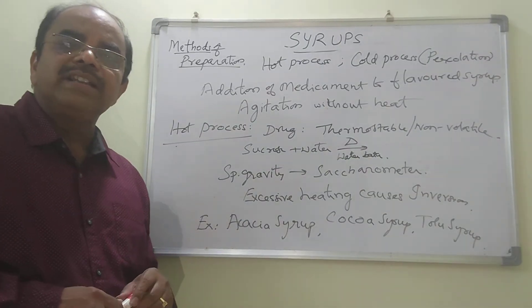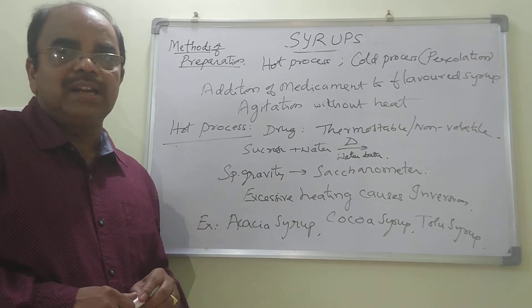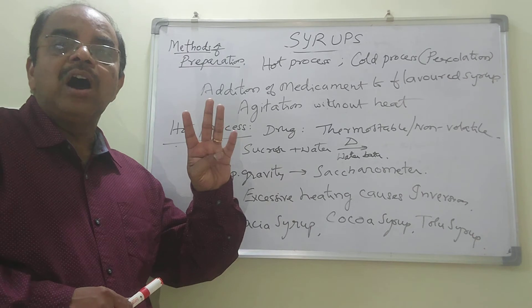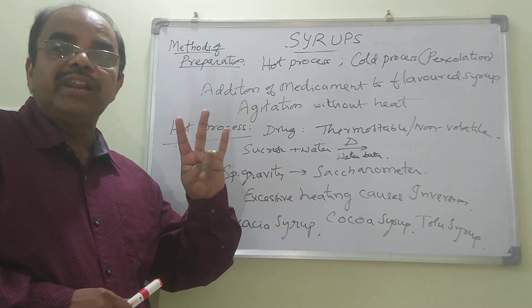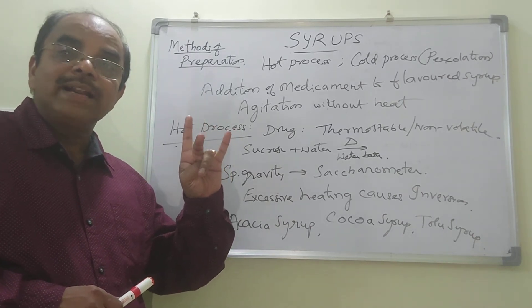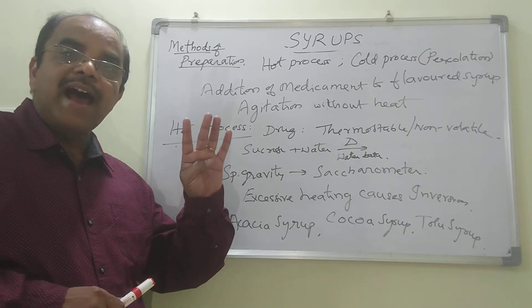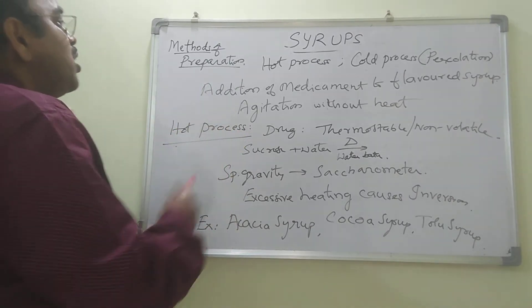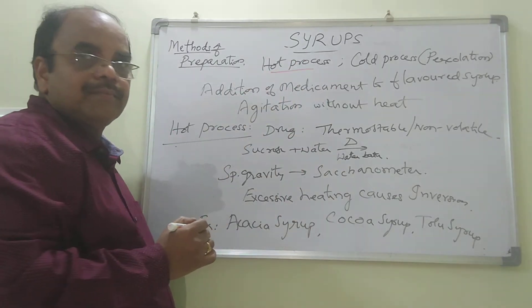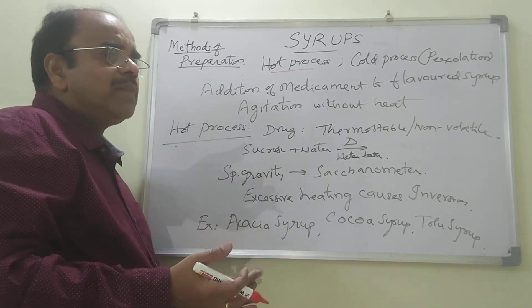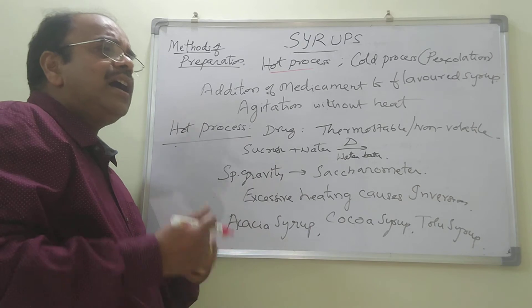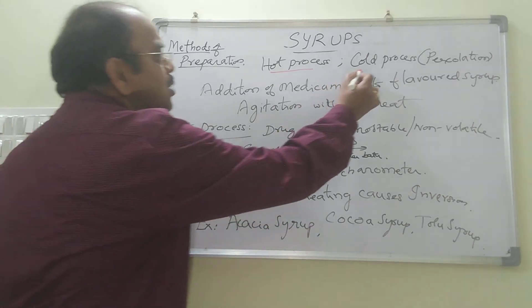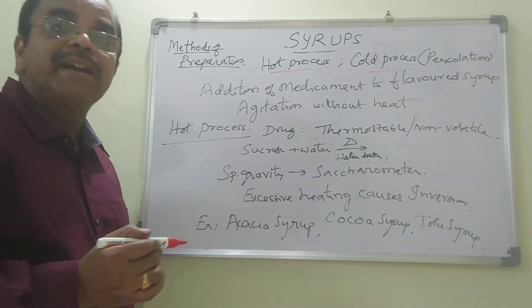What are the methods of preparation of syrups? Majorly there are four methods: hot process, percolation, addition of the medicament to the flavored syrup, and agitation without heat. Hot process uses a water bath — take the sucrose, add water, and start heating. Cold process uses percolation.